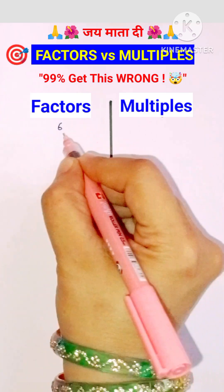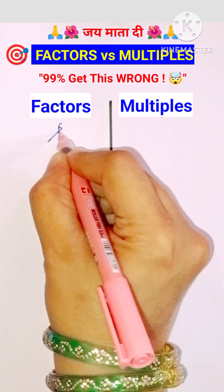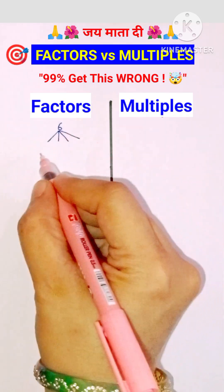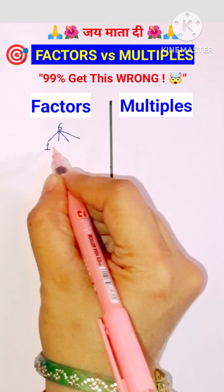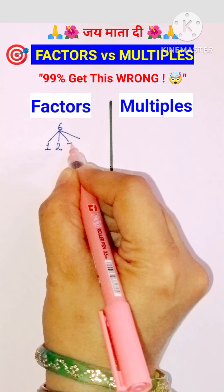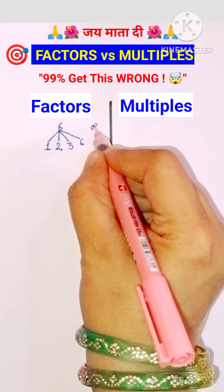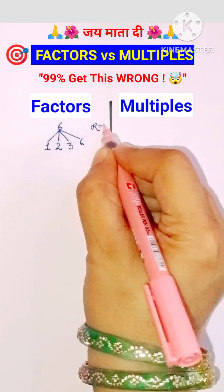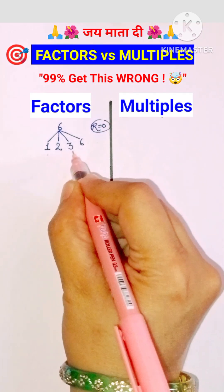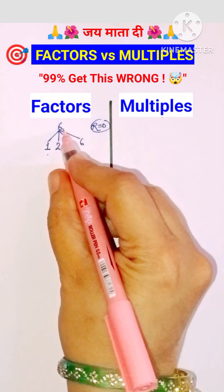A given number is exactly divisible from which numbers — all those numbers are the factors. Like 6 is exactly divisible from 1, 2, 3, and 6. Exactly divisible means when you divide, the remainder is 0. So 1, 2, 3, and 6 are the factors of 6.